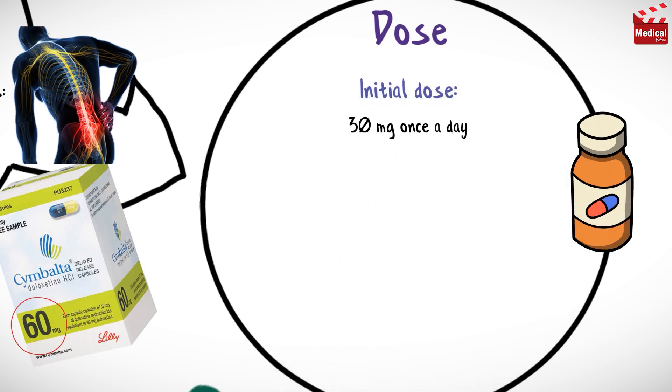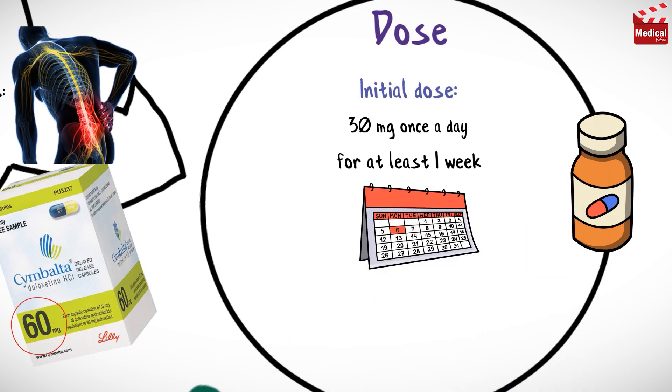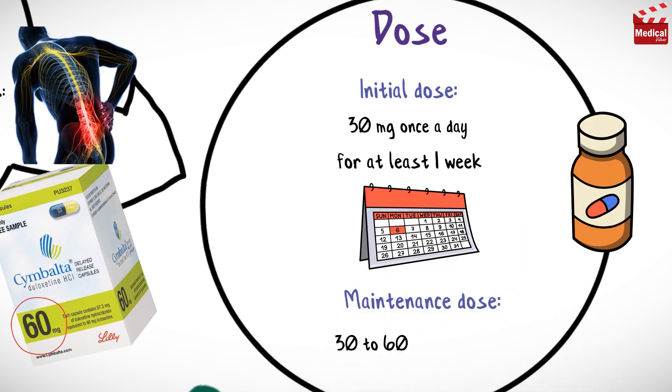The usual initial dose of duloxetine is 30 milligrams once a day for at least one week, and the usual maintenance dose is 30 to 60 milligrams once a day.